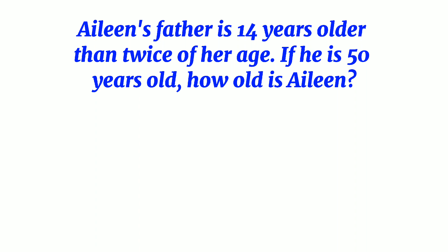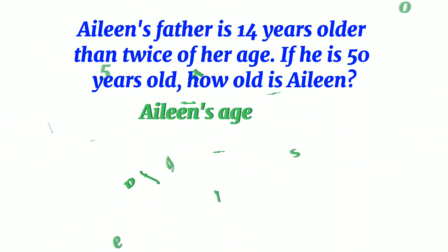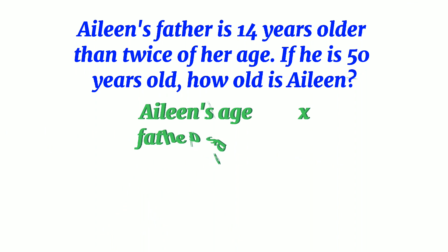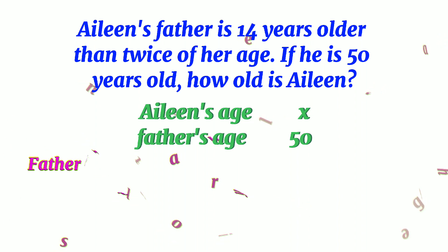We are going to show the information through a table. Aileen's age is unknown, so we put X. Father's age is 50. Now we are going to make an equation from the given information.